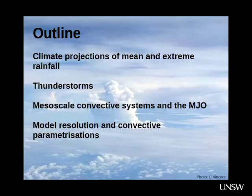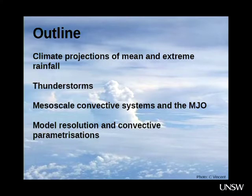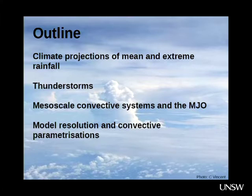I'm going to talk about some large-scale climate projections of mean and extreme rainfall, which is not really my area of expertise. I'm then going to give a brief overview of what thunderstorms are and how they form. I'm then going to talk about mesoscale convective systems and the MJO, and finally look at how model resolution and convective parametrizations impact on convection in our understanding of weather and climate.